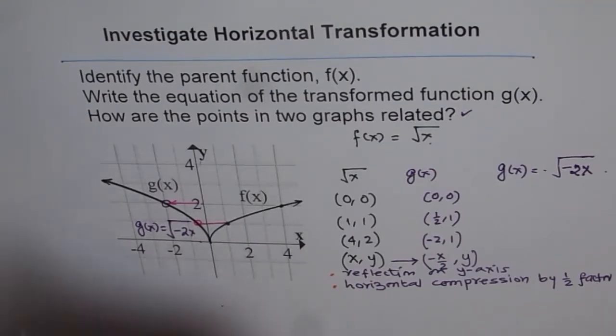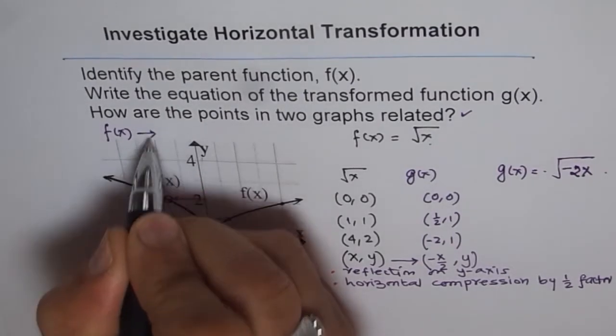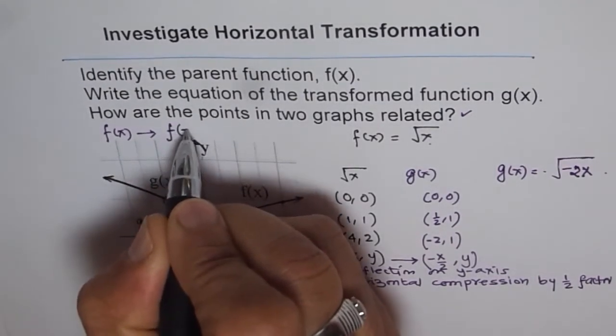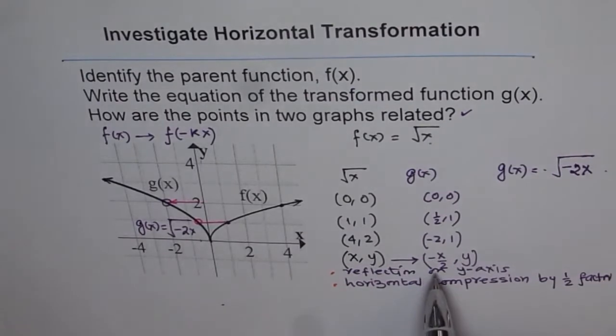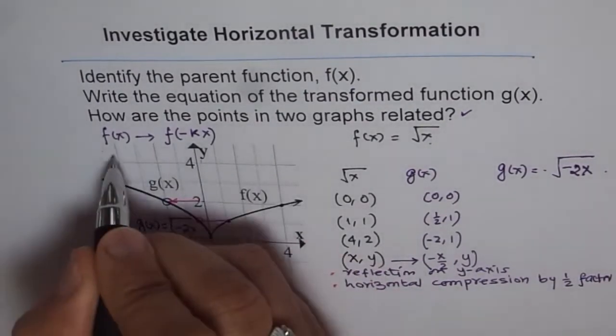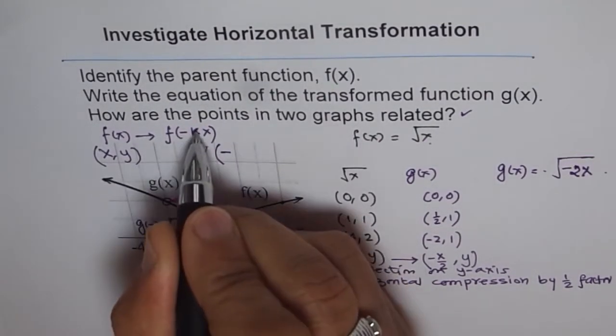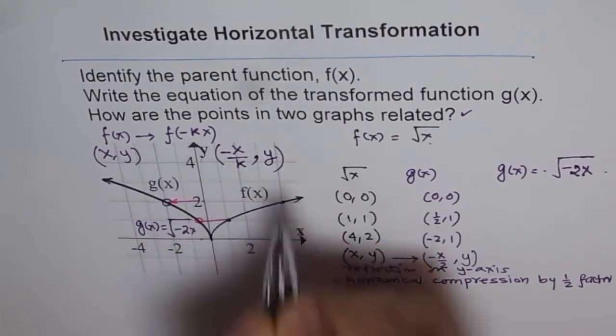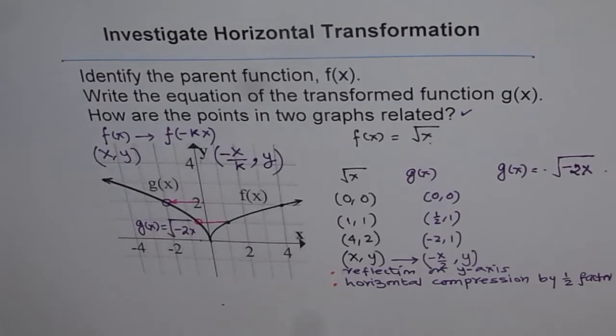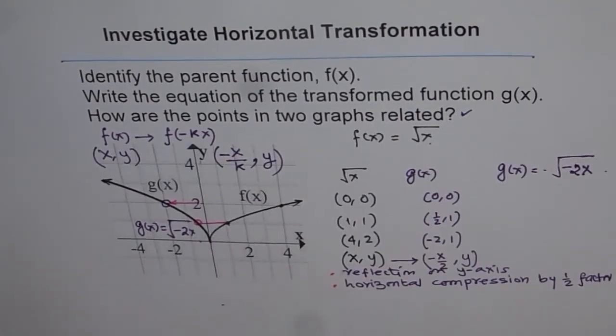Now let me give you a general solution for this. So here the general solution is that if I have a transformation, which is from f of x to f of, let us say, minus kx. In that case, minus makes all these x values negative. So the original points, which we had, let us just say, x and y, so on this function, the x points will become negative, and you divide by k. So that is how the x points will get changed, and y points will remain the same. So that is the transformation of each and every points for a general case. Here we have a very specific case where each point is compressed by a factor of half. Do you see that? I hope you appreciate it.